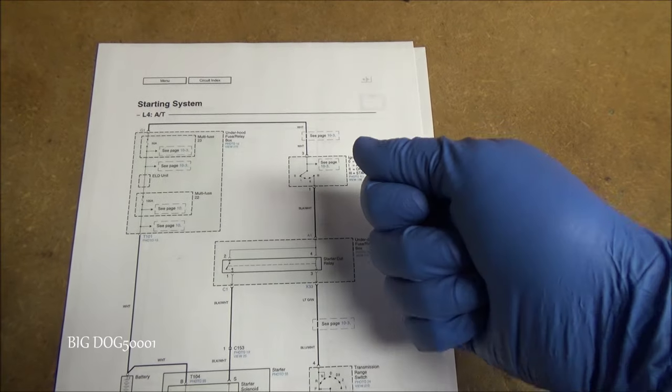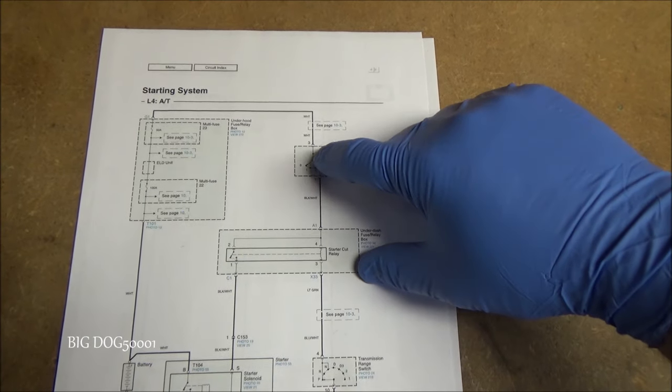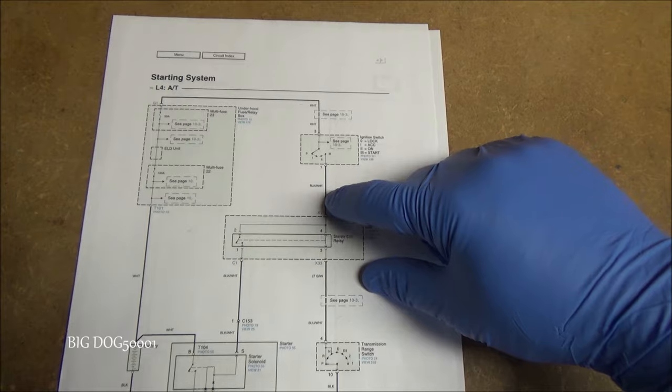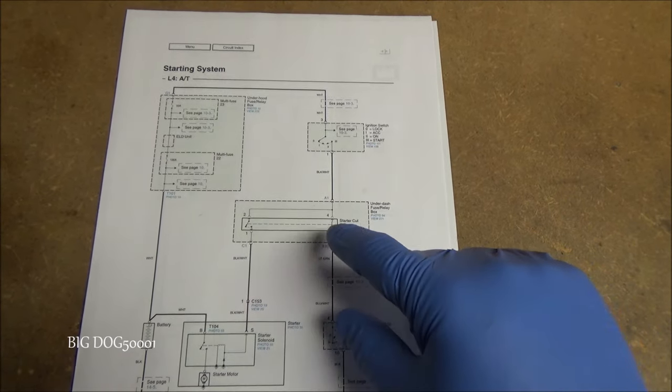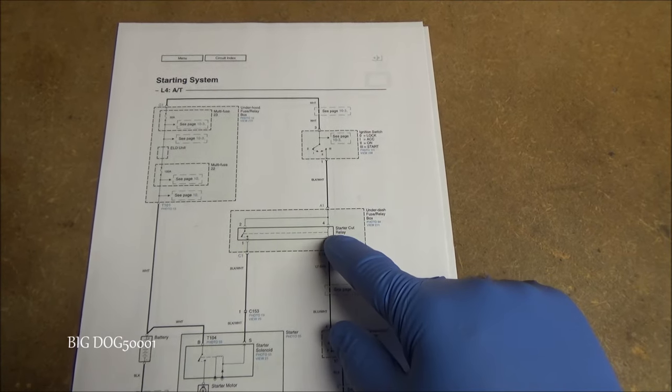When we go one, two, and then three, which is our start position, that's going to bring our contact over here and supply power down to our underdash fuse relay box, and it provides power to our starter cut relay.